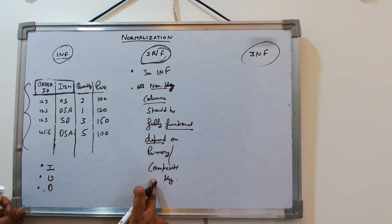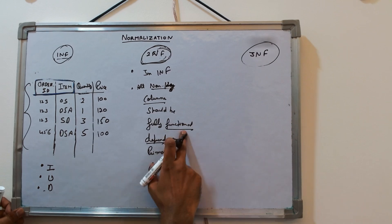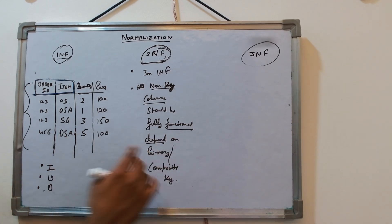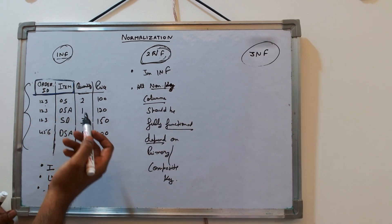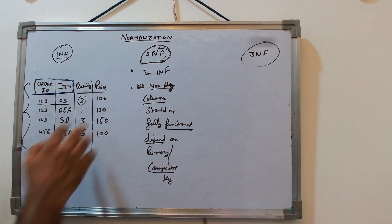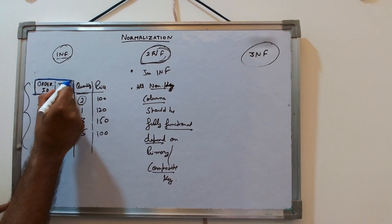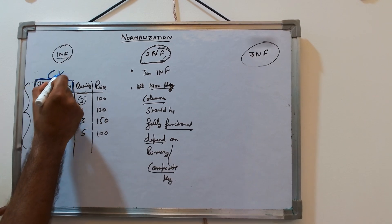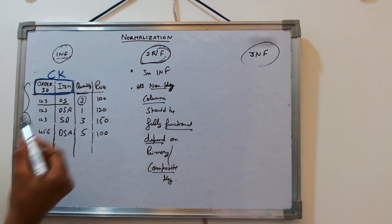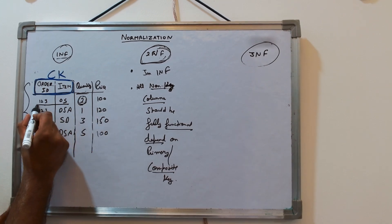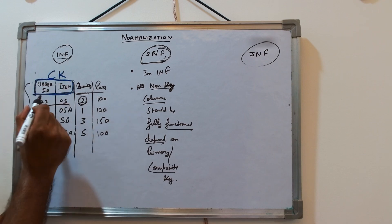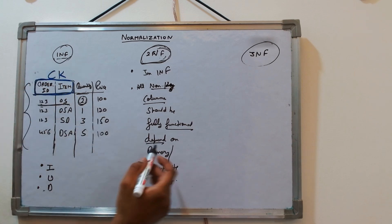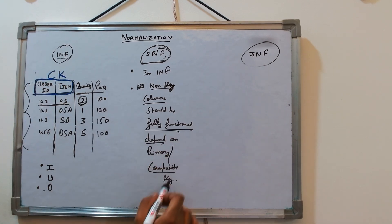So why there is an issue in this? Because it does not fulfill the 2NF, which says that all non-key columns should be fully functional dependent on primary or composite key. So what is the meaning of functional dependent? Functional dependent means that the value of one column attribute is able to determine the value of another column. Here if you see that in this table, these two form a composite key, and this quantity value is fully functional, means fully on both the columns of the composite key. It's not partial, just order ID or item, but on both the columns of the composite key.